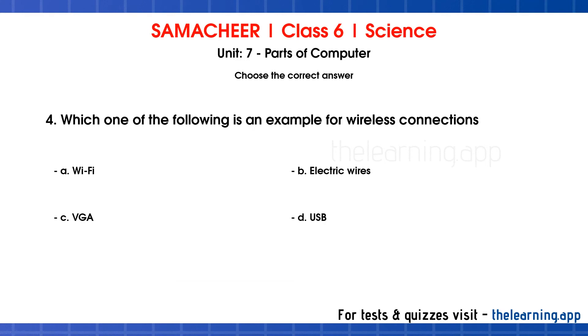Fourth question: Which one of the following is an example of wireless connections? Options are A) Wi-Fi, B) electric wires, C) USB. The correct answer is option A, Wi-Fi wireless connections.